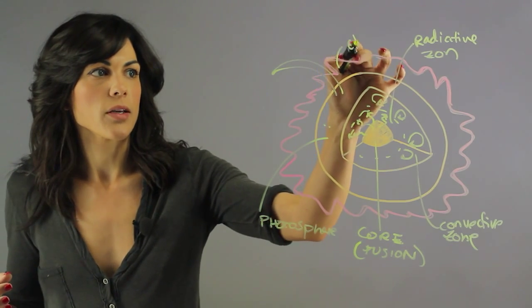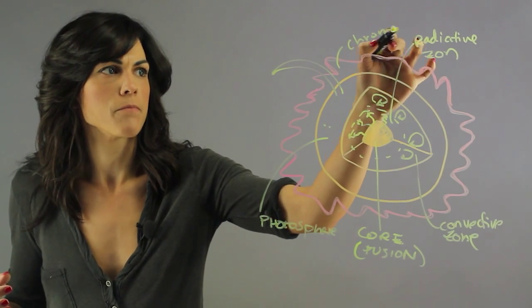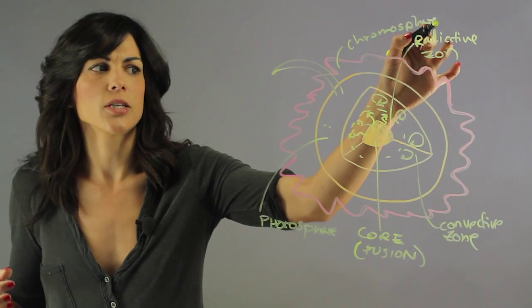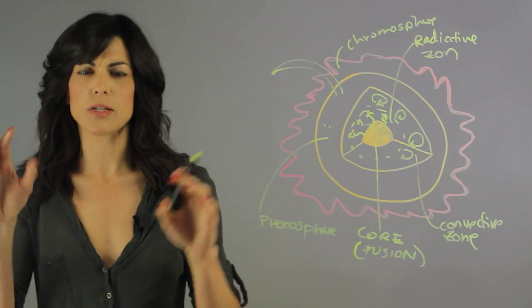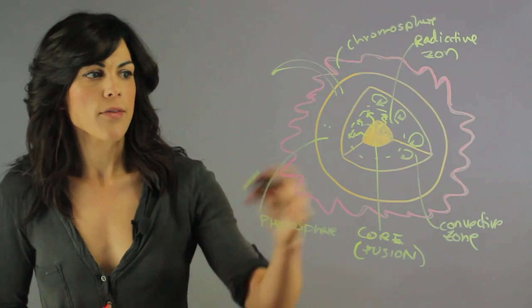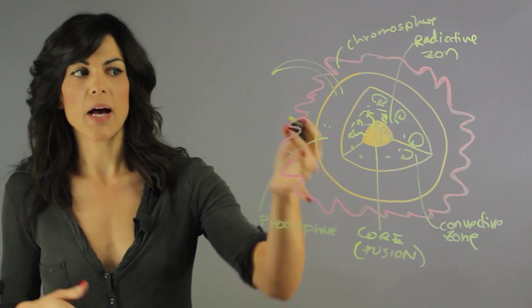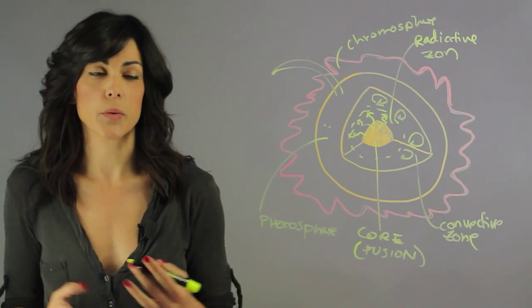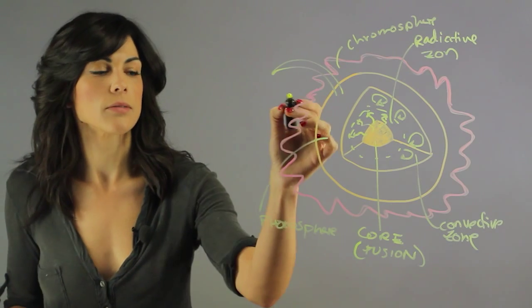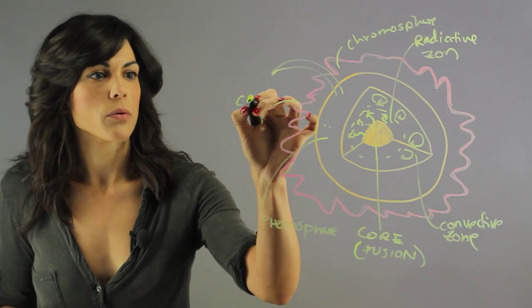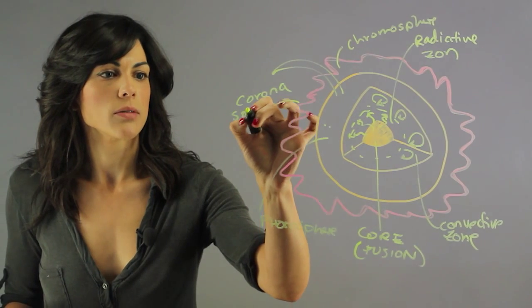which is sort of like an orange reddish zone and it's kind of just diffused. And then after the chromosphere you have the corona, and the corona is responsible for the solar winds.